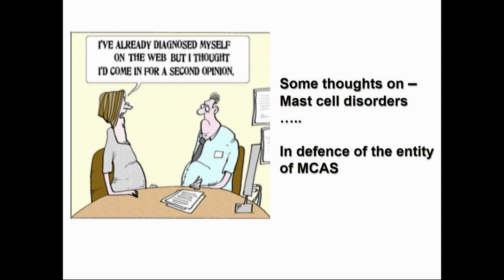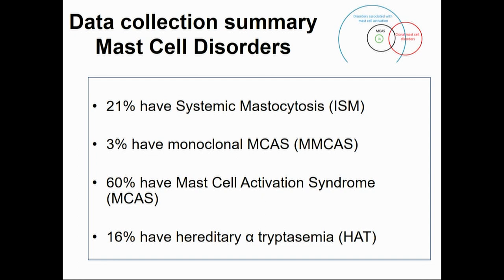Taking an example of 100 patients from my practice: about 20% have systemic mastocytosis, 3% have a monoclonal mast cell activation syndrome, 60% have a non-clonal mast cell activation syndrome, and about 16% have hereditary alpha or hyper tryptasemia.